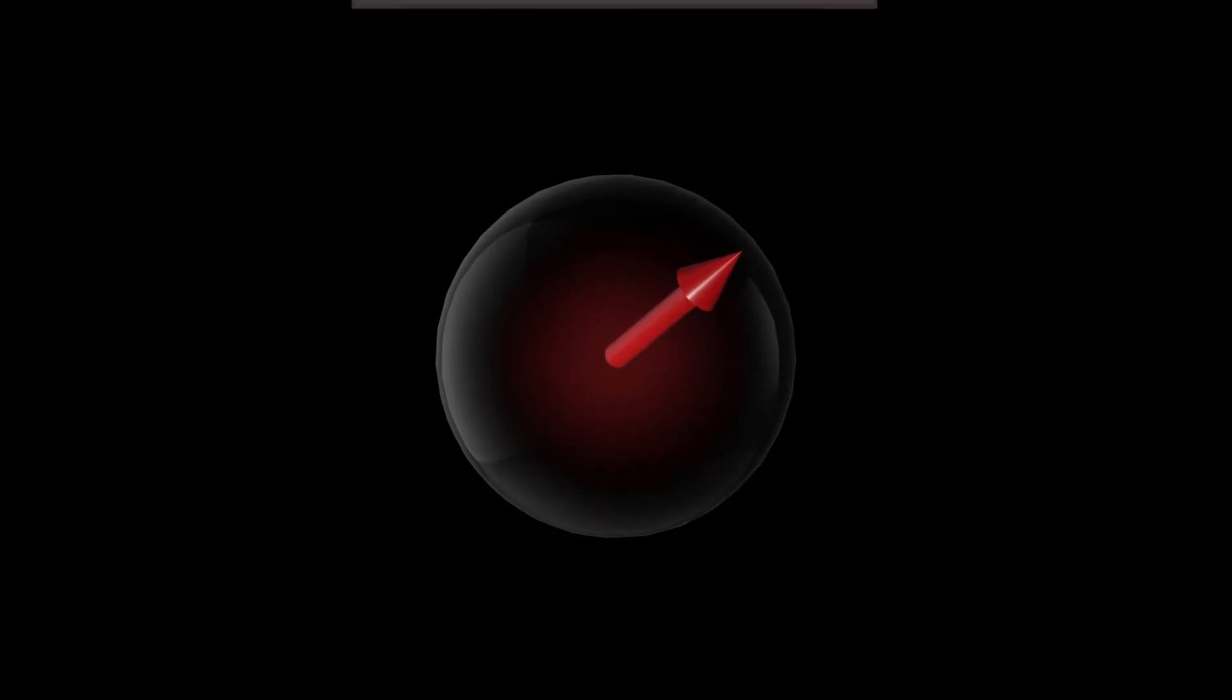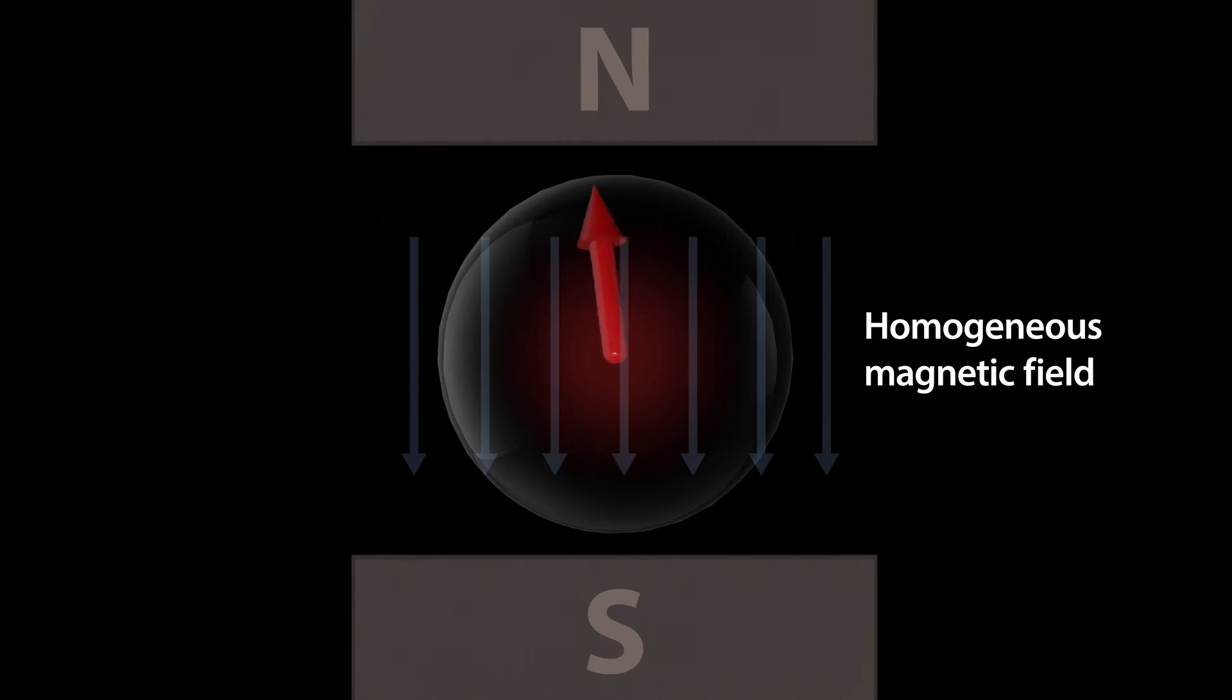Why does the magnetic field have to be inhomogeneous? If the magnetic field were homogeneous, the spin would just rotate around the cone.